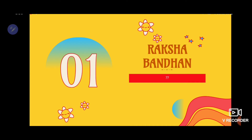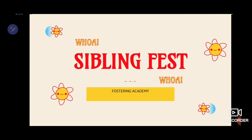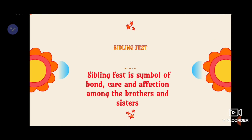The first word is Rakshabandhan. How do we say Rakshabandhan in English? If you can guess, you can mention it in the comment section. Let's see what we call Rakshabandhan in English — it's Sibling Fest. We can use this word like: Sibling Fest as a symbol of bond, care and affection among the brothers and sisters.